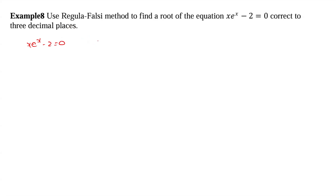First we need to find the interval [a, b] in which the root lies. By trial and error method we need to find a and b. By substituting first we need to substitute 0 in that function. So f(0) is equal to 0 into e power x minus 2, which is equal to minus 2.